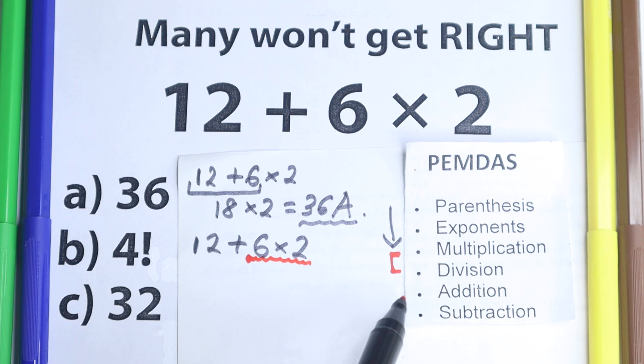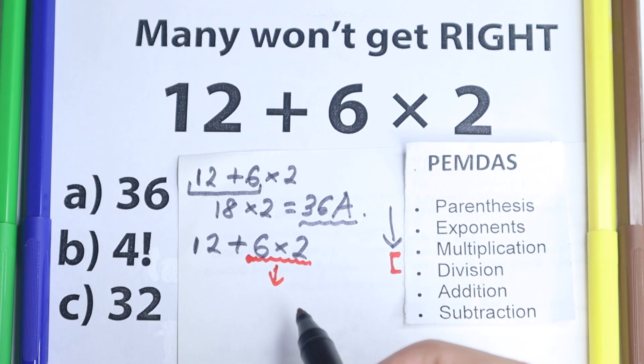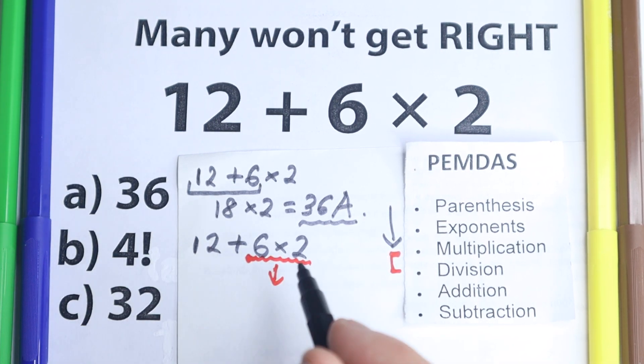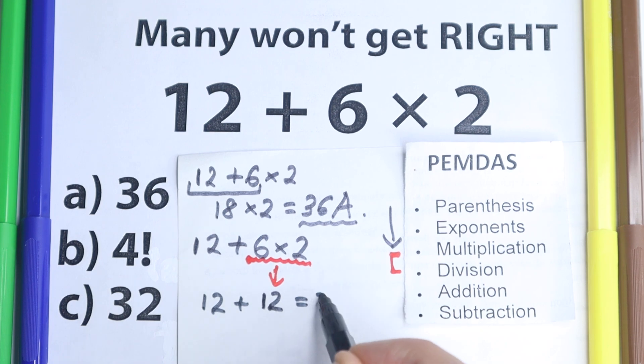And moreover, multiplication is before addition right here. So as you can see, we need to multiply or divide first, then add and subtract. So if we multiply this 6 times 2, we know that this is equal to 12. Yeah, 12 and 12 plus 12 in the beginning, so we have 24.